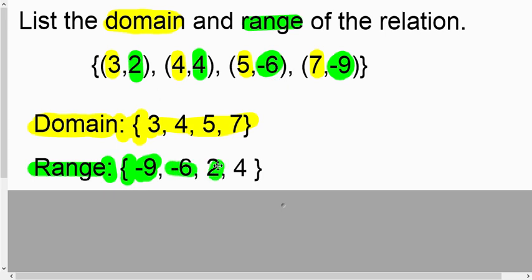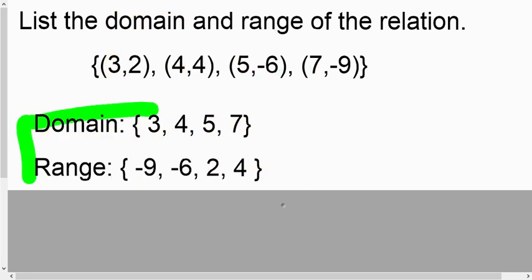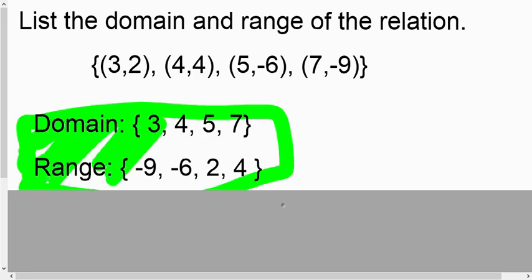Negative 6, 2, and negative 4. And then close it with a bracket. So when you're done your answer should be right here on your paper when it's asking you to list the domain and range.